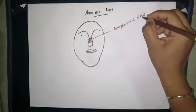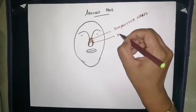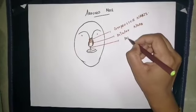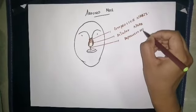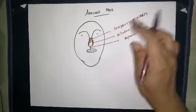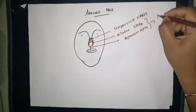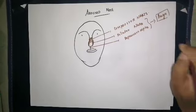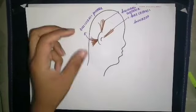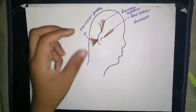The muscles around the nose include compressor naris, dilator naris, and depressor septi. Procerus is also present in this region. The compressor naris and dilator naris help in making the expression of anger.